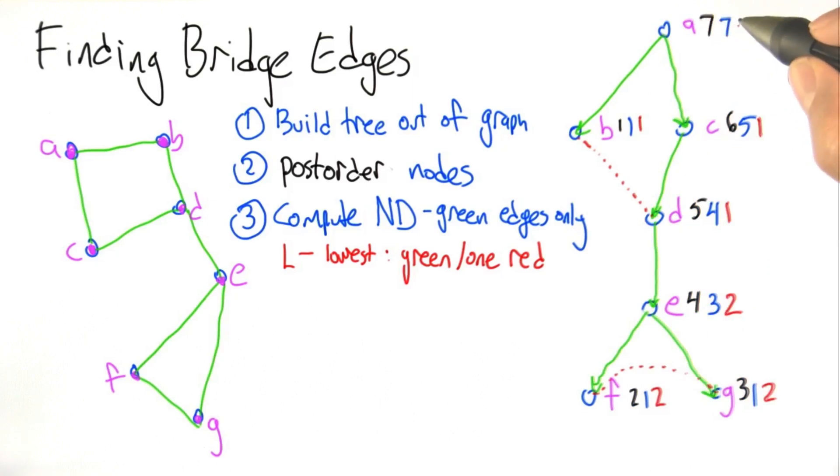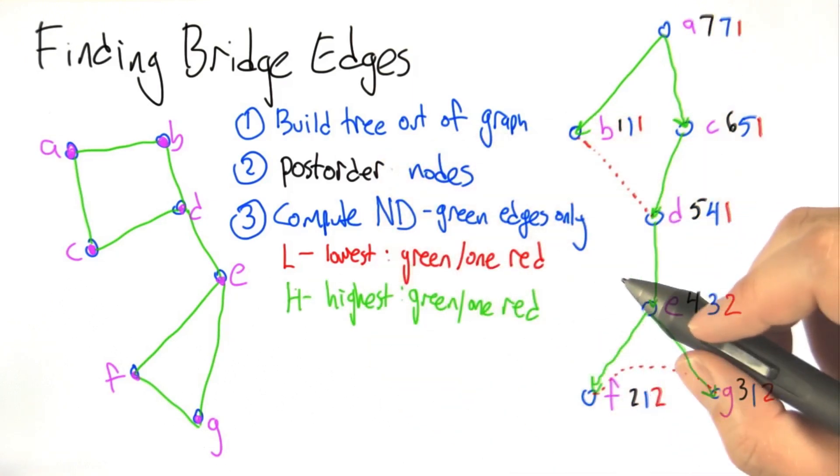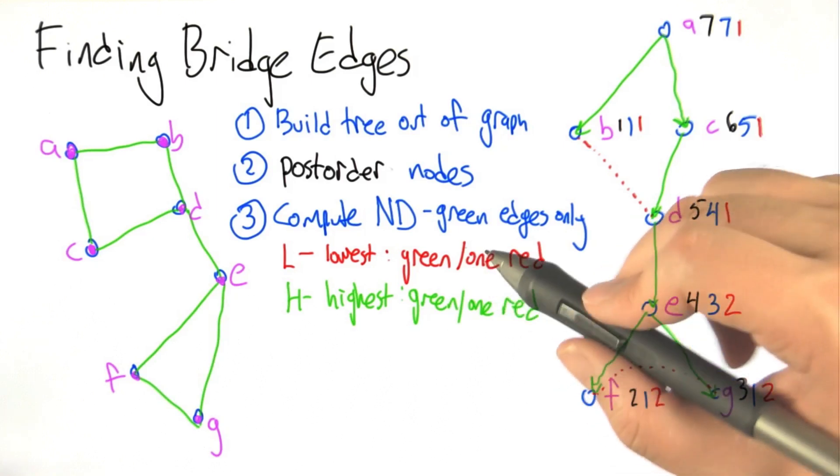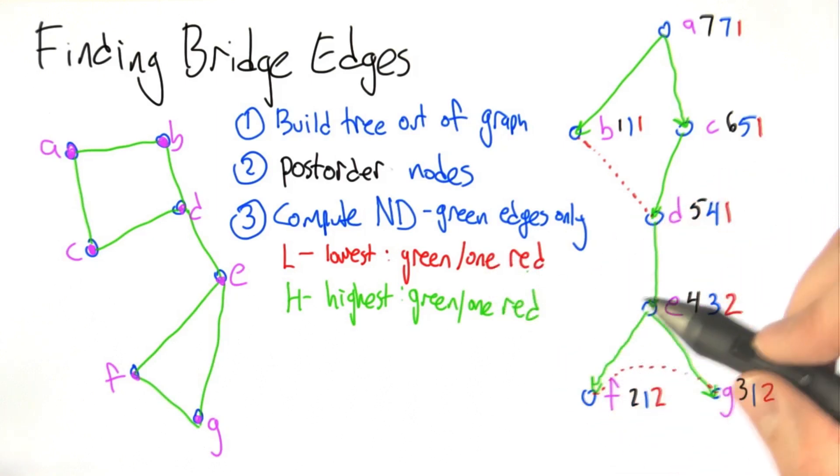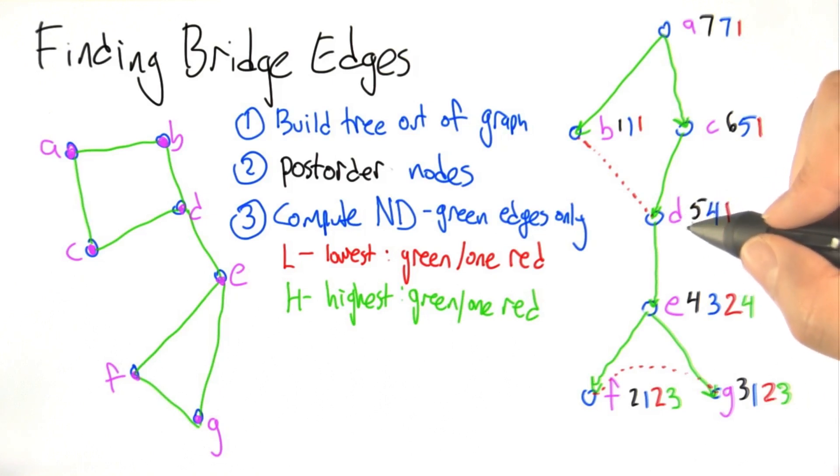And A includes everything so that's going to include the 1 so that will be the smallest. H is the same idea except of that same set that we computed for L we want to know the largest value. For G between F and G the largest value is 3. For E between E, F and G the largest value is 4.